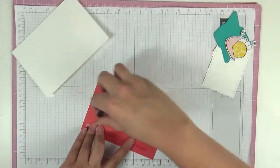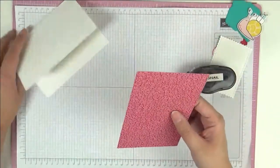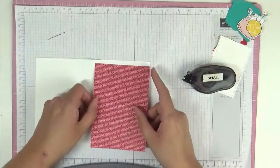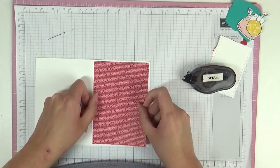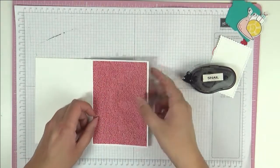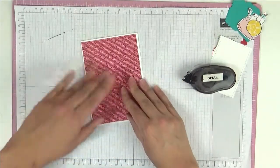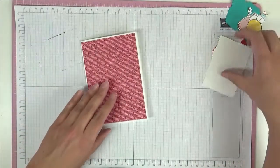Then I've got a piece of the real red designer series paper from the 6x6 family stacks and we're just going to put this down like this and all the measurements will be on my blog post and the links to that are in the description box below.